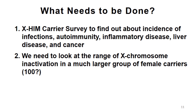The other thing that's important is to look at a larger group of carrier females to examine this lyonization question. Ideally, the most powerful study would pair that with the data from the survey — here's the data we have on infections and malignancies, now let's pair that with how much lyonization there is in that particular individual. We're exploring how to write the IRB to allow us to do this, so we may have to do two different things, but this is an important study that needs to be done.